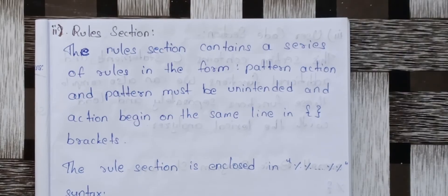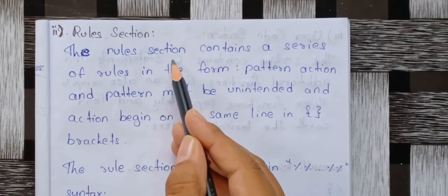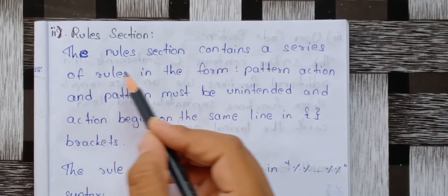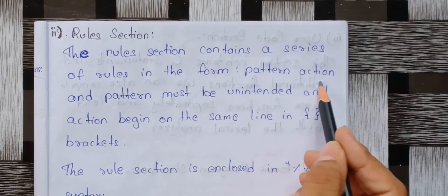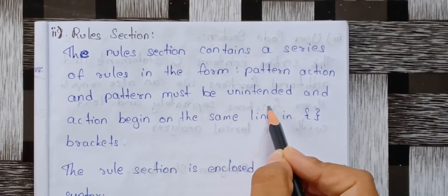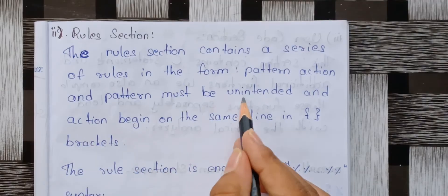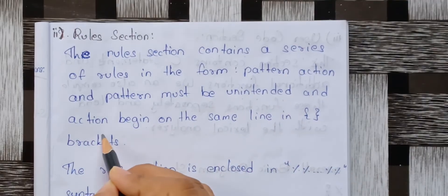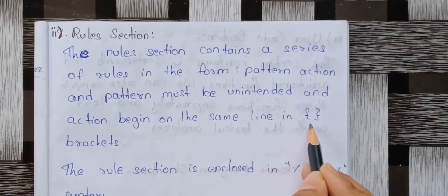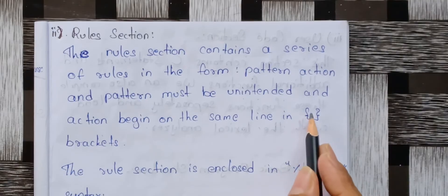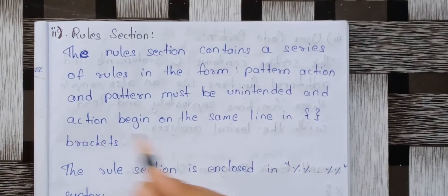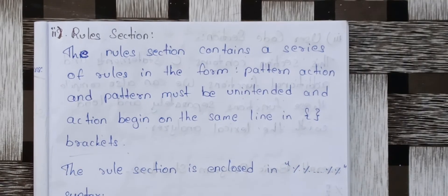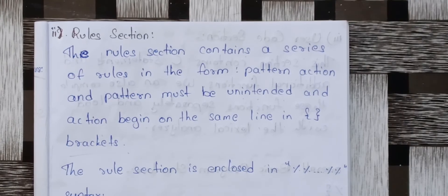Next is the Rules section. The Rules section contains a series of rules in the form of pattern-action pairs. The pattern must be unindented, and the action begins on the same line inside curly brackets. In this section, there are pattern actions and pattern matching — the patterns correspond to tokens you already have.